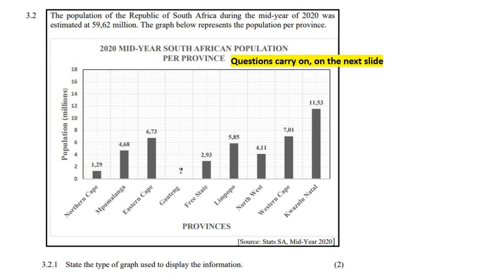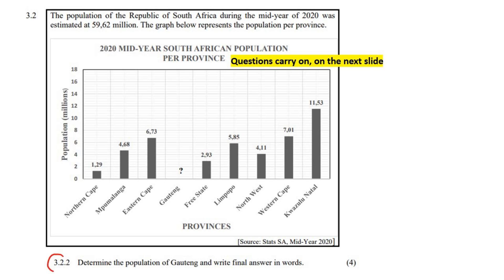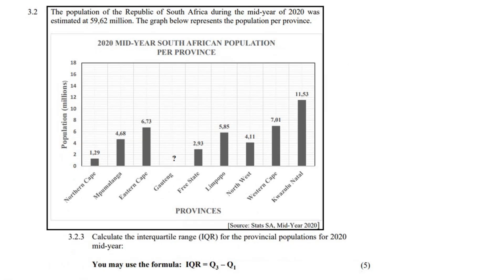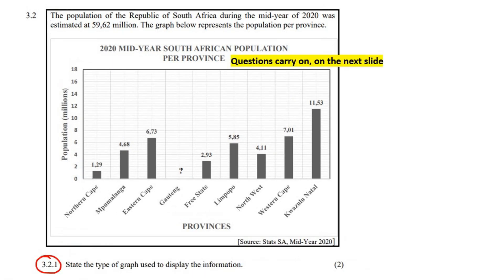With this question we're going to be doing multiple parts — one question, then a second question, and then a third question. It says that the population of South Africa during the mid-year of 2020 was estimated at 59.62 million people. The graph below represents the population per province. The Northern Cape had 1.29 million people and Mpumalanga 4.68 million people. Remember those numbers are in millions.